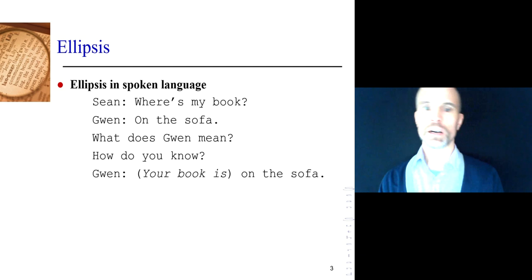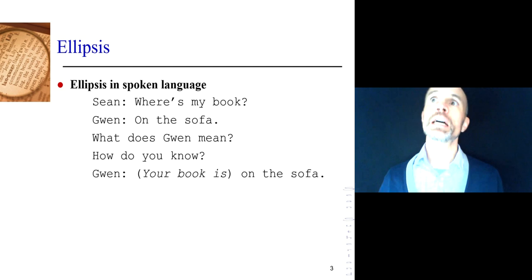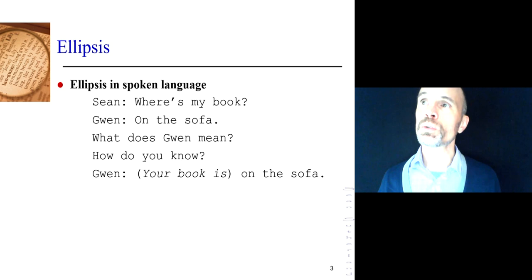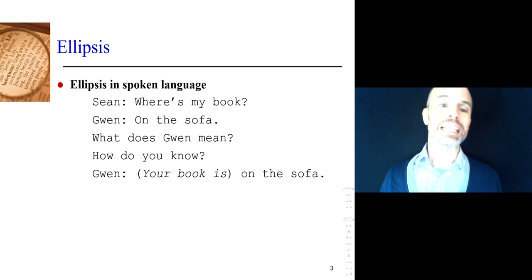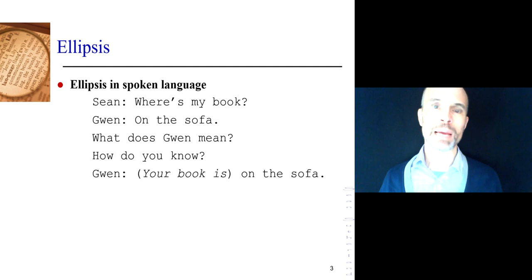They understand each of those words individually — 'on the sofa' — and they understand it's a prepositional phrase, but they can't interpret anything beyond that. They'd have no way of knowing whether it means 'your book is on the sofa' or 'the dog is on the sofa' or 'on the sofa is my favorite place to take a nap.' They wouldn't know. So think about what you would know if you heard the whole part — that shows you that the ellipsis is the words 'your book is.' That's what ellipsis is: leaving something out, but knowing the listener will interpret exactly what is missing.